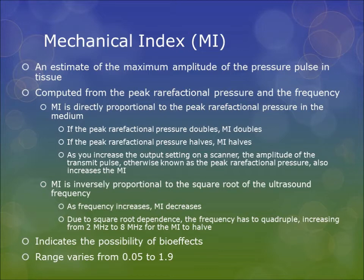MI is also inversely proportional to the square root of the ultrasound frequency. As frequency increases, MI decreases. Due to square root dependence, the frequency has to quadruple — increasing from 2 MHz to 8 MHz — for the MI to halve. MI also indicates the possibility of bio effects and ranges from 0.05 to 1.9.